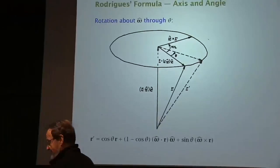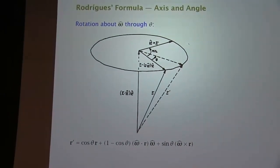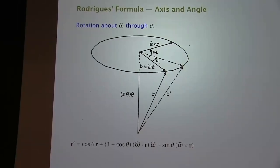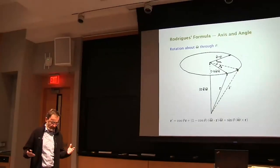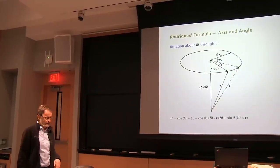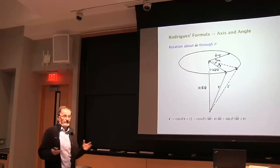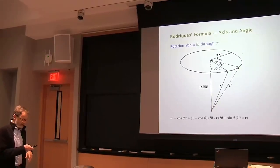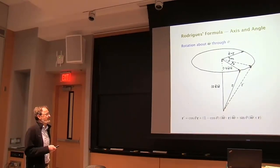Rodriguez was a banker in Paris who apparently found banking boring and spent his nights doing math. The operations we want are two: take a vector and rotate it, and compose rotations. Here, addressing the first problem, we have a vector r and an axis of rotation. We rotate through angle theta about that axis to reach a new position r prime. Converting to a 2D problem in the plane indicated by an ellipse, we combine two vectors as cosine theta times one vector plus sine theta times the other.